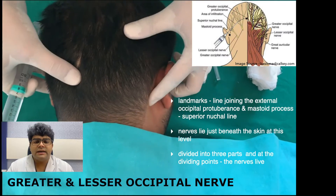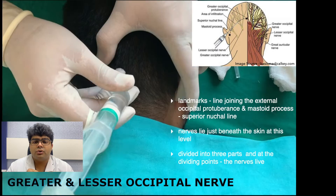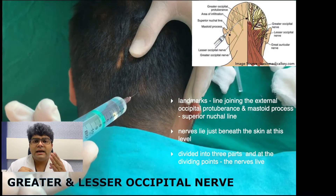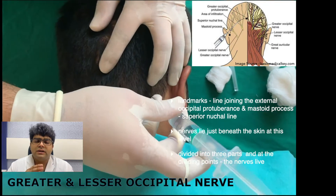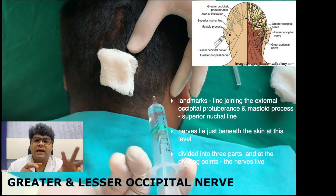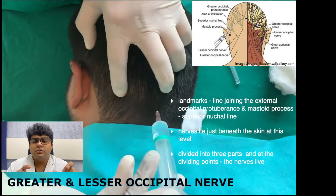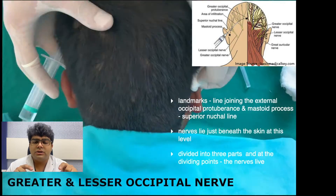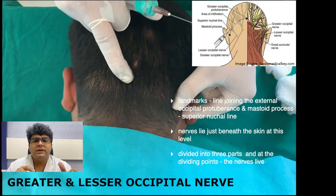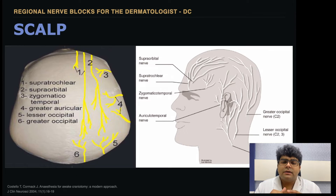The greater and lesser occipital nerve landmarks are on the line joining the external occipital protuberance and the mastoid. We divide that line into three equal parts. The junction of the lateral two-thirds and the medial one-third is the greater occipital nerve; the junction of the lateral one-third and the medial two-thirds is the lesser occipital nerve. We go a bit deeper here and once we hit the bone, that is where we infiltrate.